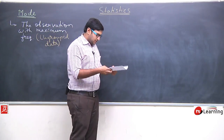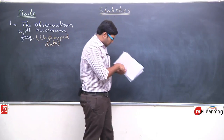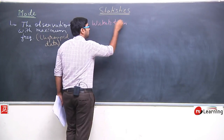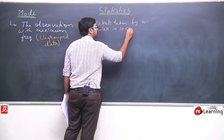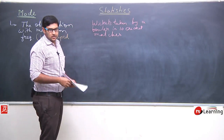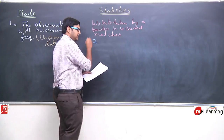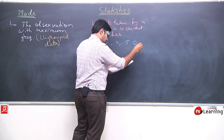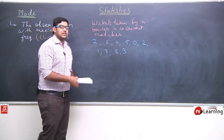For example, let us take an example from the NCERT book. The example is: the wickets taken by a bowler in 10 cricket matches are given. Ten cricket matches mein ek bowler ne kitne wickets liye — individual match mein kitne wickets liye — that data is given to us: 2, 6, 4, 5, 0, 2, 1, 3, 2, and 3.